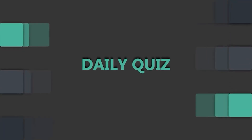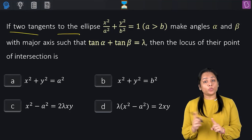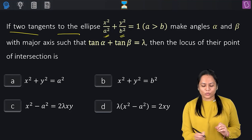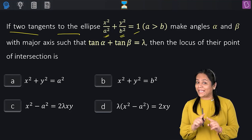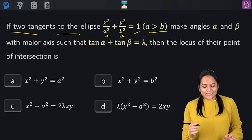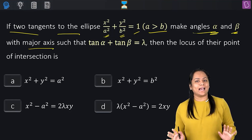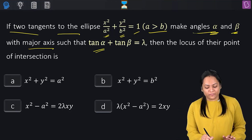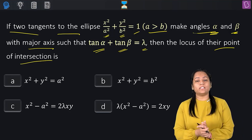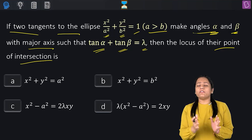The next question asks: if two tangents to the ellipse x²/a² + y²/b² = 1 (a > b) make angles α and β with the major axis (x-axis) such that tan α + tan β = λ, find the locus of their point of intersection.